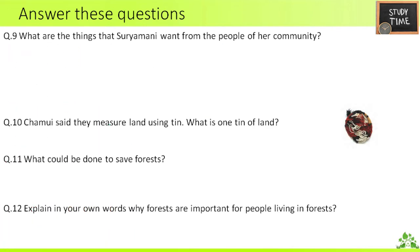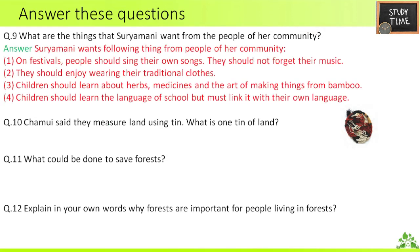Ninth — what are the things that Suryamani wants from the people of her community? First, on festivals people should sing their own songs and not forget their music. Second, they should enjoy wearing traditional clothes. Third, children should learn about herbs, medicines, and the art of making things from bamboo. Fourth, children should learn the language of school but must link it with their own language.